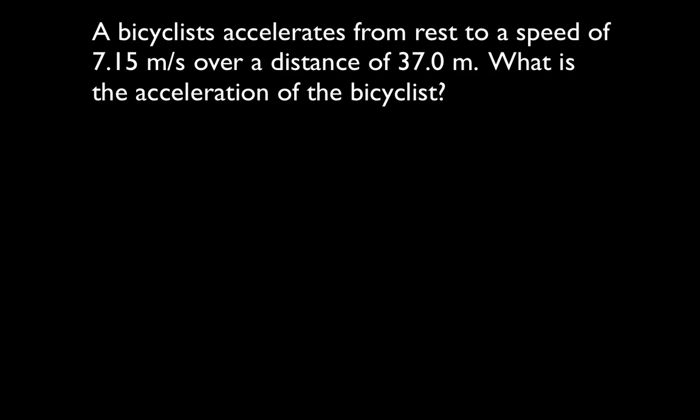The first thing you should always do is write down what you're given and what you're trying to solve for — the knowns and the unknowns. As I said in the previous video, there are five different variables in the kinematic equations, and you should write down all five of them: the initial velocity, the final velocity, the change in position, the acceleration, and the time. Write down all five.